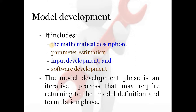After finding the parameters, a suitable model has to be developed. That model may be a mathematical description or a software development. This model development phase is an iterative process in which the optimizer has to change the parameters. If proper output is not obtained, the optimizer will again check whether the selected parameters were correct.